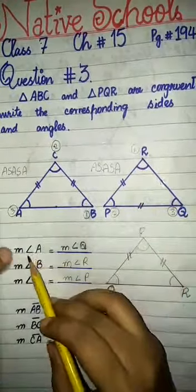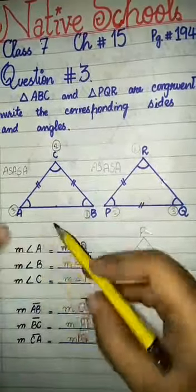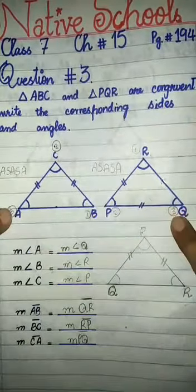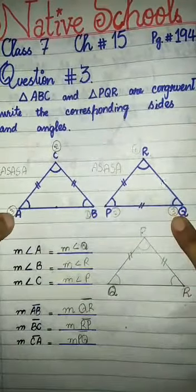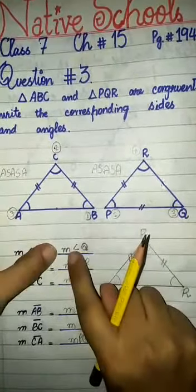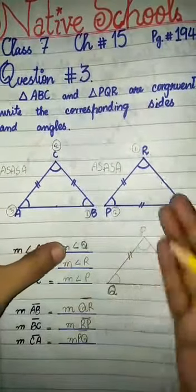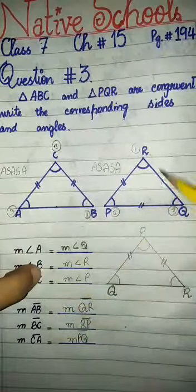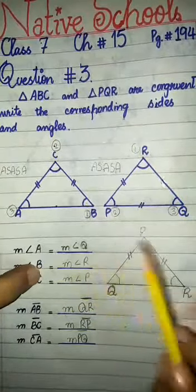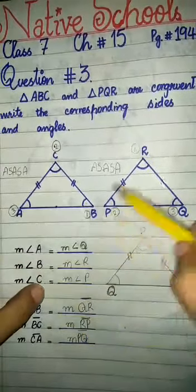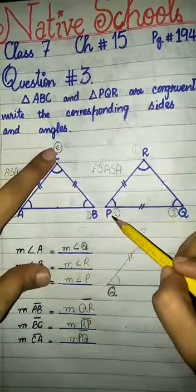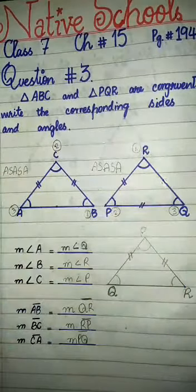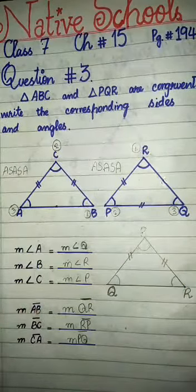Now you can fit the answers. Angle A is asked — see what number is on angle A: three. What angle is at number three? That is measurement angle Q. This is the same answer as before. Now angle B — what number is on it? One. Number one is angle R — same answer. And angle C — number two is written on it. Measurement angle P. Both methods give the same answer. Now comes the turn of side AB.